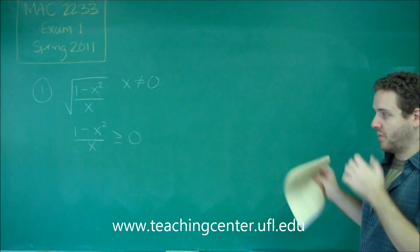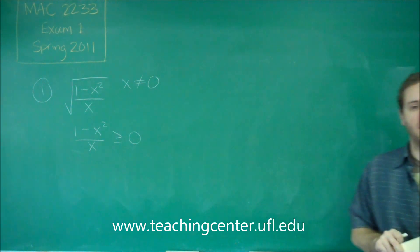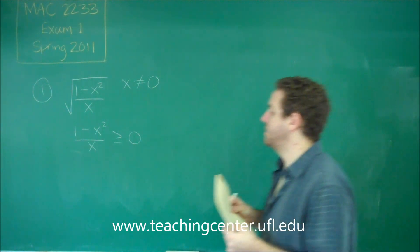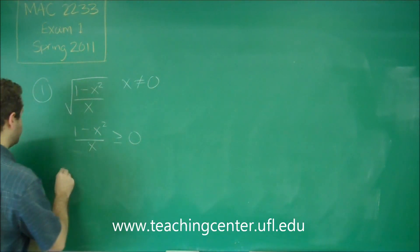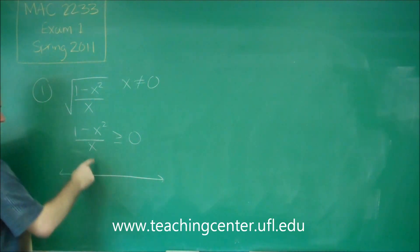So remember that when you have a rational function in an inequality, you want to find all the zeros at the top and the bottom, put them on a number line, and check points from there. So let's think about all the numbers that we should be putting on the number line. Well, we definitely have zero from the denominator.